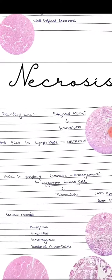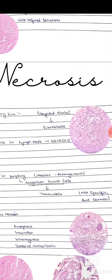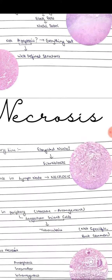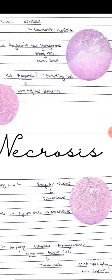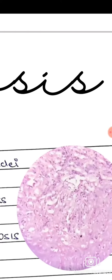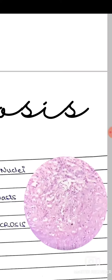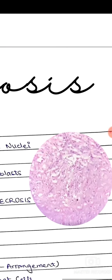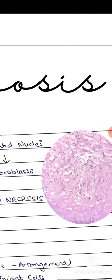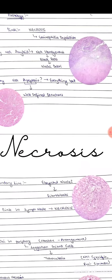When we look at the boundary line between the normal portion and the necrotic portion, we see cells with elongated nuclei. These cells are known as fibroblasts.